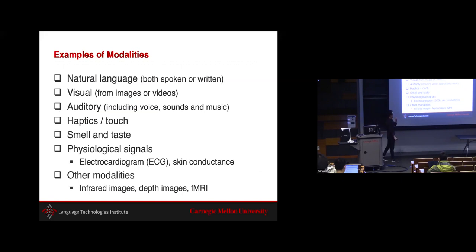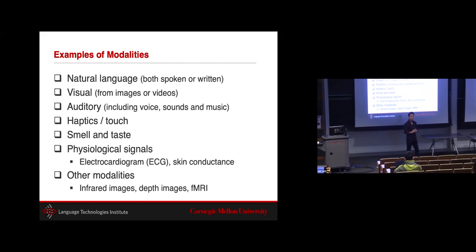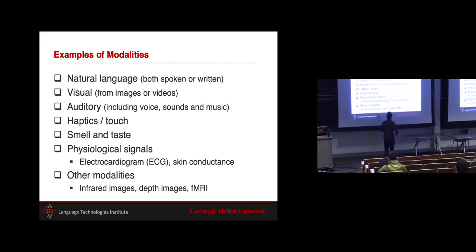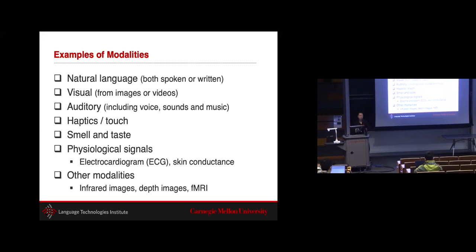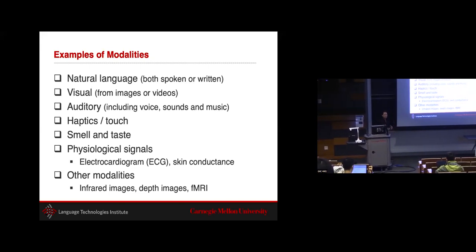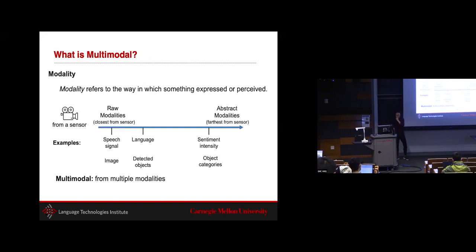Some specific examples of modalities include natural language, visual, and auditory — the three Vs of human communication. Beyond that, robotics involves touch sensors; there are sensory modalities like smell and taste that computers can't really process yet; and there are high-dimensional physiological signals like ECG and fMRI used in healthcare, all of which constitute modalities. In short, modalities refer to a way in which something is expressed or perceived.